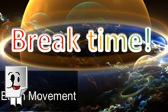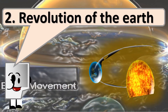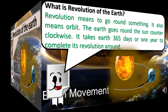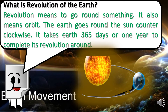Break time! Welcome back, kids! Number 2 — Revolution of the Earth. What is Revolution of the Earth? Revolution means to go round something. It also means orbit. The Earth goes round the sun counter-clockwise. It takes 365 days, or one year, to complete its revolution around the Sun.